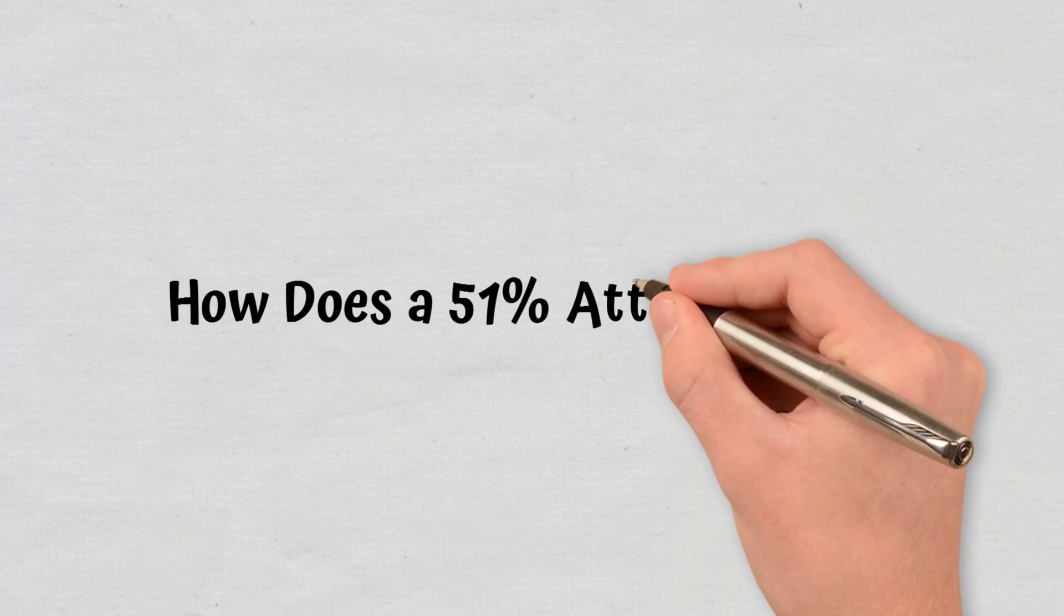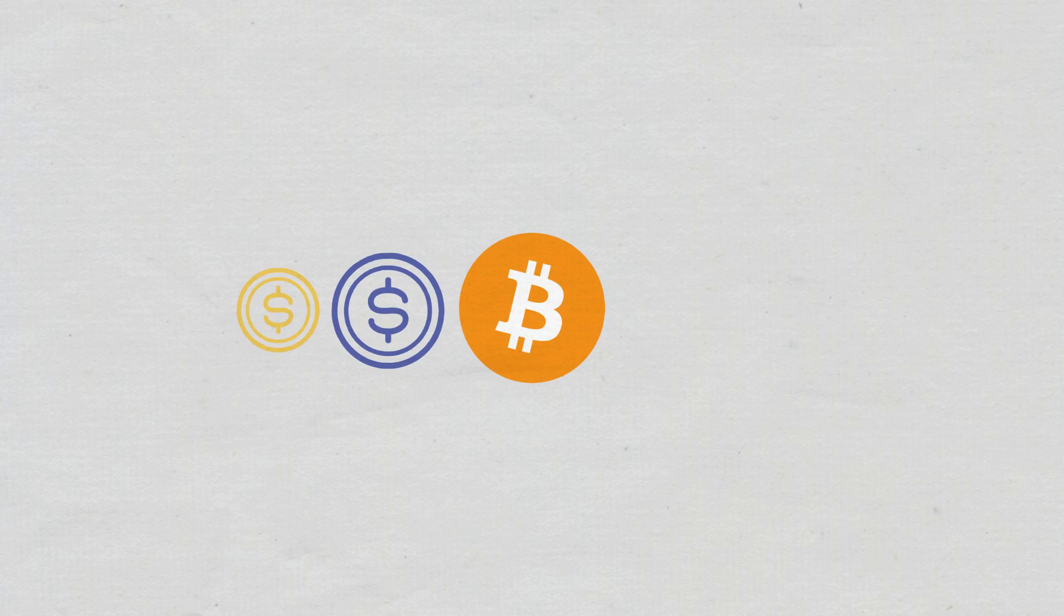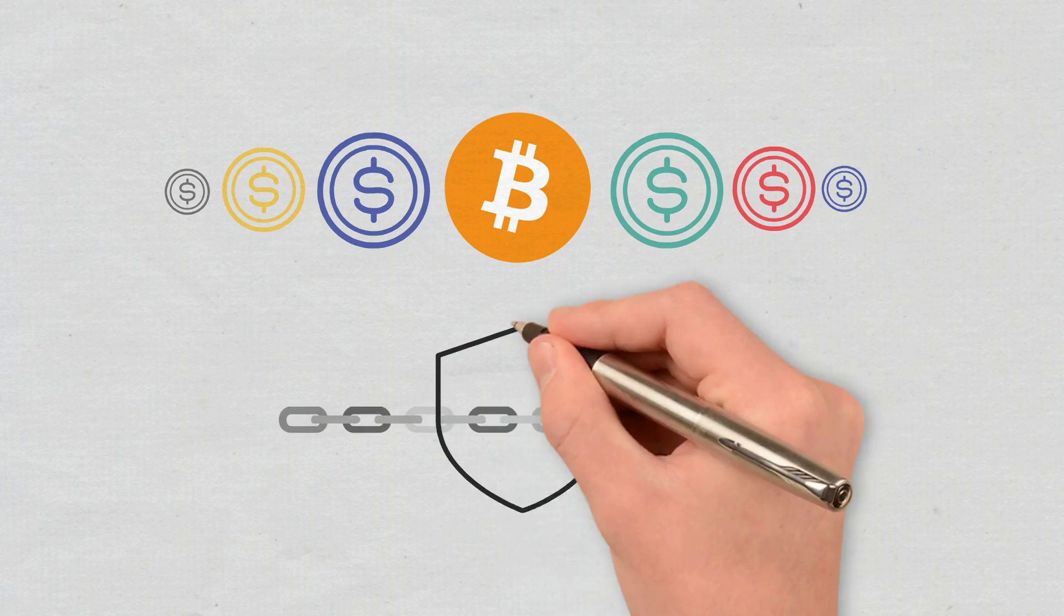How does a 51% attack work? Bitcoin, and many other cryptocurrencies, are based on a blockchain, which is a sort of distributed ledger.